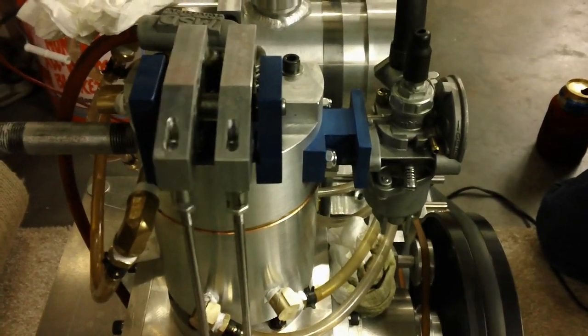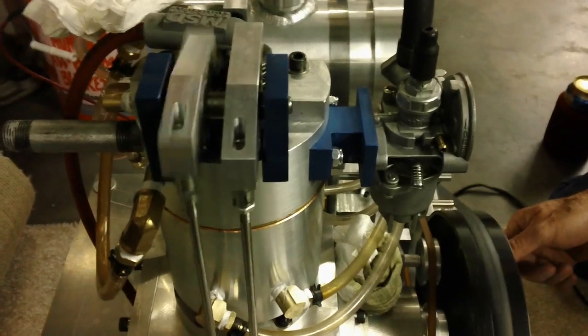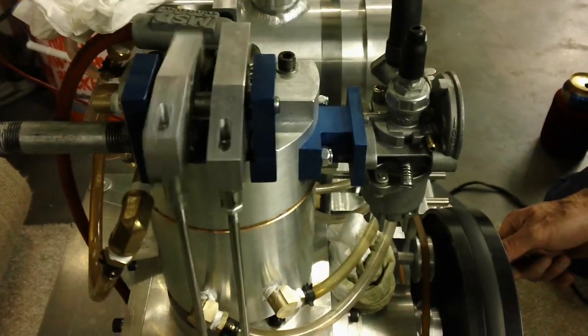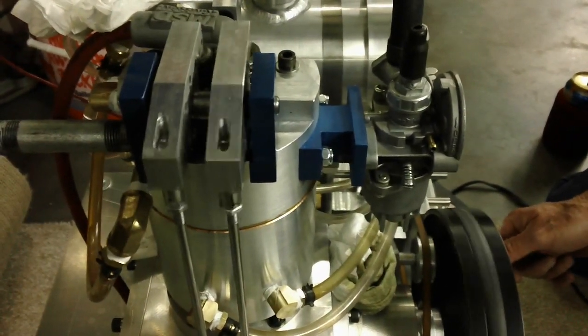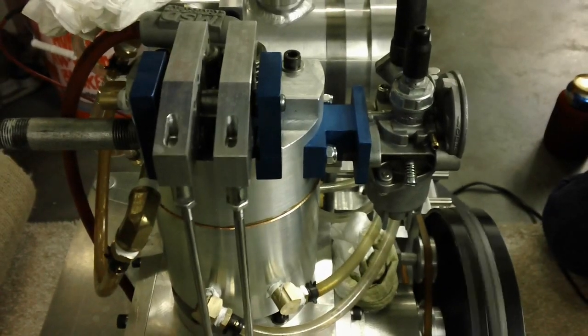This is a 155cc four-stroke water-cooled engine. The engine was scratch-built except for the flywheel, generator, carburetor, valves, valve springs, and guides.